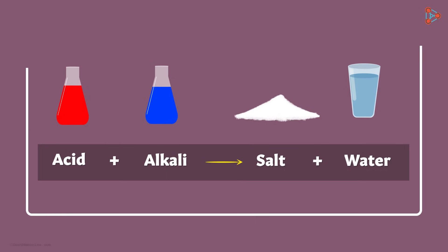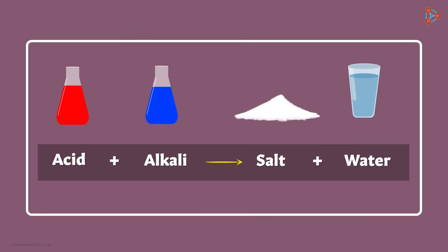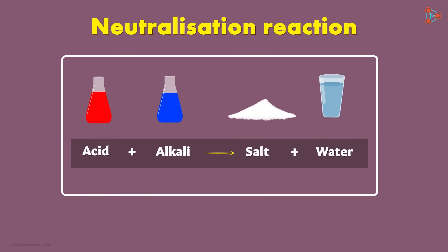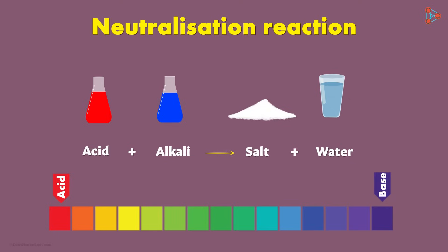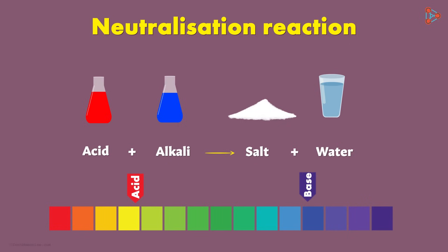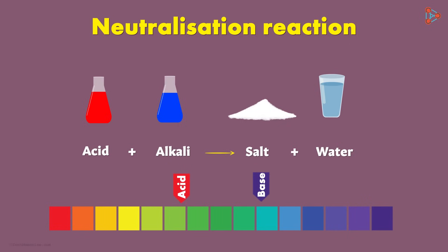And what is this reaction called? Does it have a specific name? Yes, it does. It's called a neutralization reaction. Here, the strength of both the acid and the base are lowered. They are brought to a neutral point where the intensity of the acid as well as the base are dropped lower.